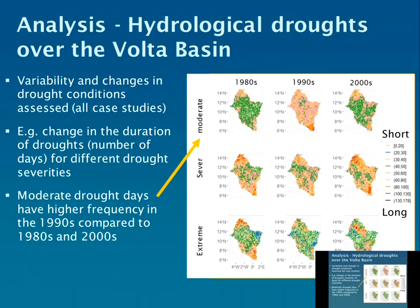Now that we have historic simulations and initial future simulations, we've been analysing variability and extremes in streamflow. Here's an example for the Volta Basin where we've been looking at drought conditions — specifically the duration of droughts in streamflow, defined as the number of days that streamflow is below a drought threshold. We've done this for different severities: moderate, severe, and extreme, and we've been looking at how that has changed over time.